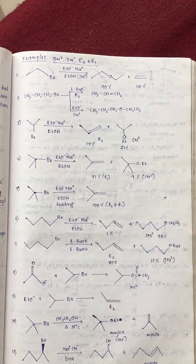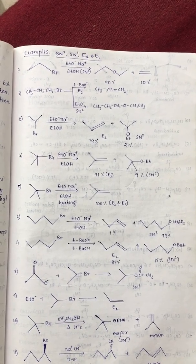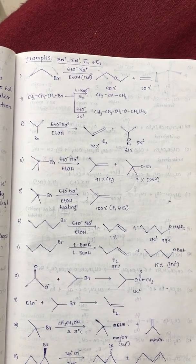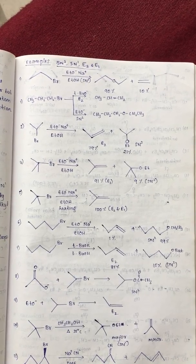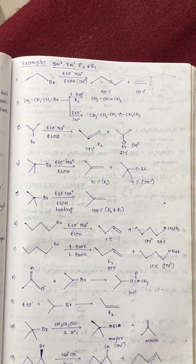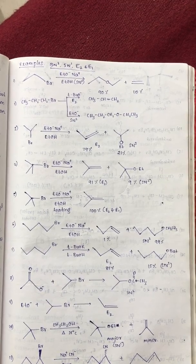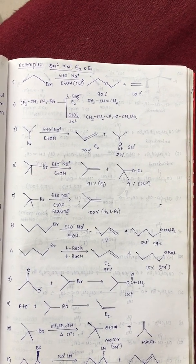Now, second example. Propyl bromide reacts with tertiary butoxide and another one is ethoxide ion. Tertiary butoxide is not a good nucleophile, it is a good base.